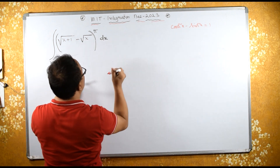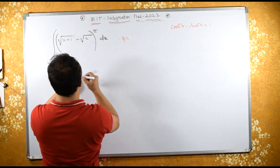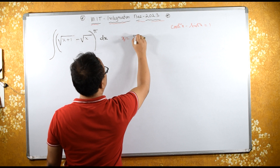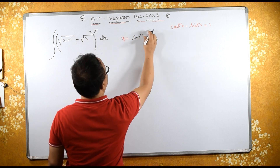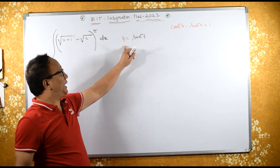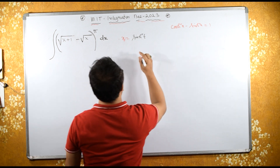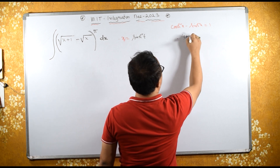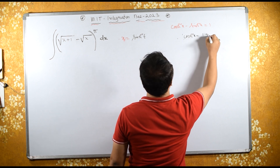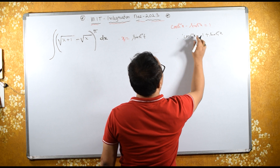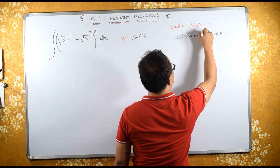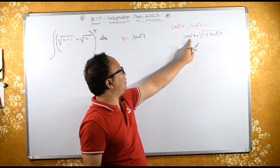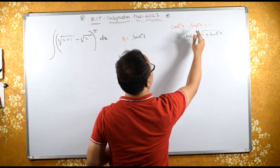Now let's substitute. If I substitute x equals to sinh squared t, then from here we get: cosh squared x equals 1 plus sinh squared x. If I have to remove the square, I take the square root on both sides — therefore 1 plus x equals cosh squared t.